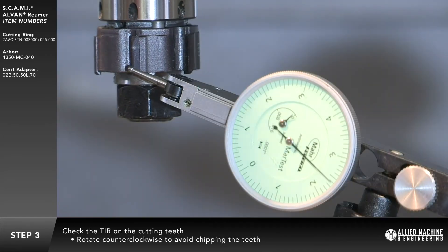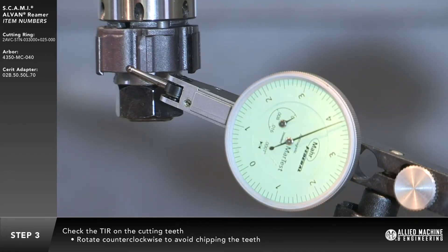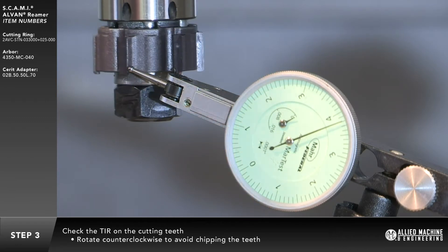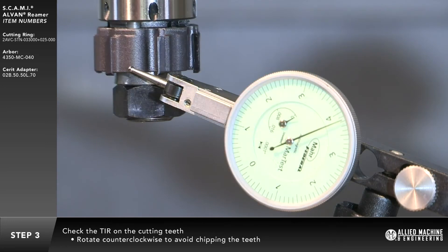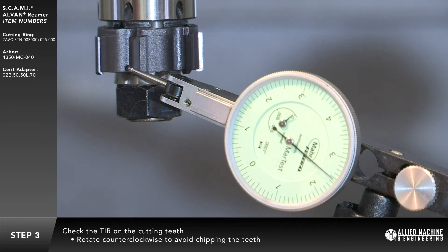Once the TIR is checked on the arbor, check the TIR on the cutting teeth. Rotate the tool counterclockwise to avoid chipping the cutting teeth.